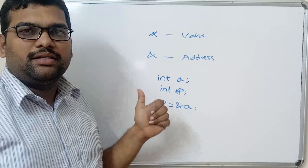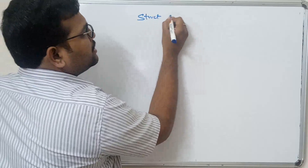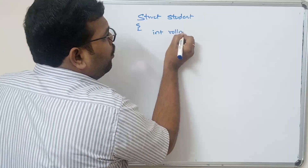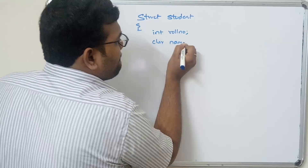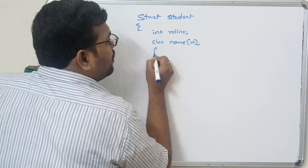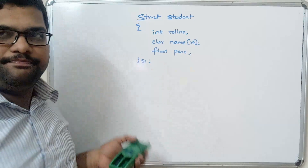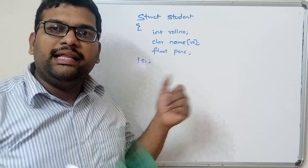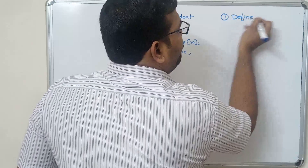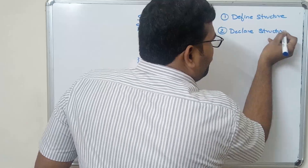If we define a structure — struct student — with tag name student, containing int roll number, char name, and float percentage, we close the structure and create one structure variable. We can create a structure variable at the definition itself or inside the main function. This is the first part: define a structure. Second: declare a structure variable.